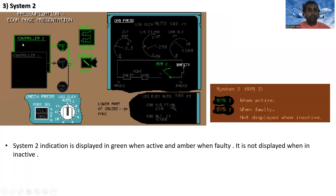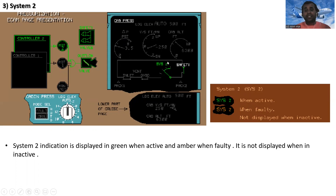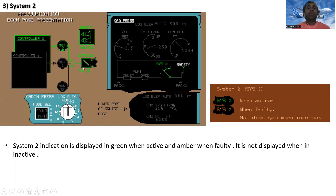System number two is controlled by cabin pressure controller CPC2, which drives motor two to the outflow valve. The system two indication is displayed in green when active, amber when faulty, and is not displayed at all when inactive.